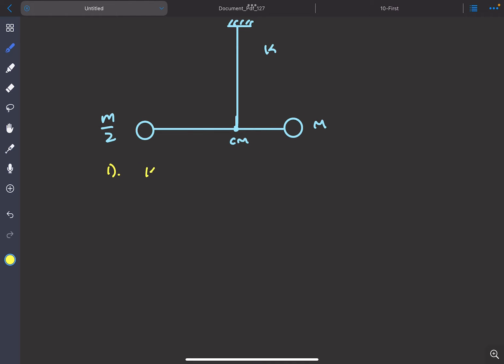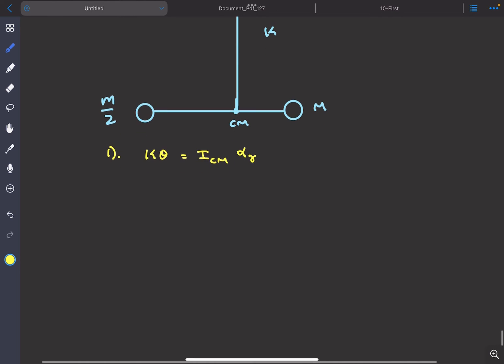So the torque kθ would be equal to the I about the axis of rotation, which is center of mass in this case, times the restoring α. Now we have to calculate the I about the center of mass.